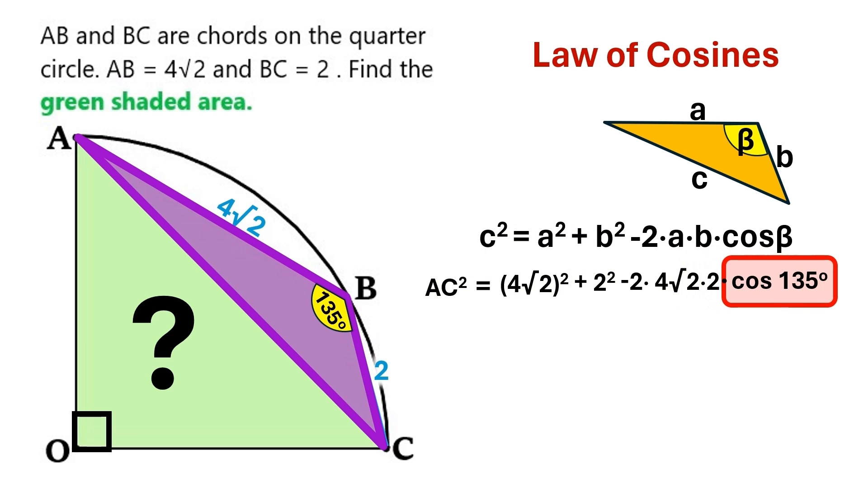Now, cosine 135 has a fixed value, which is minus root 2 over 2. I'm gonna do all this math for you.